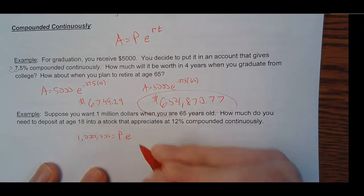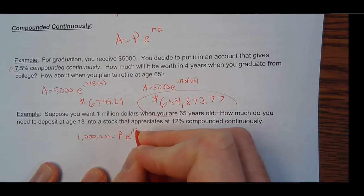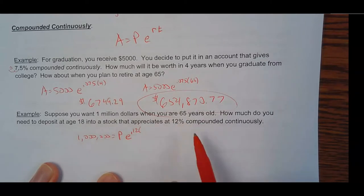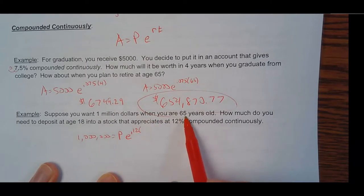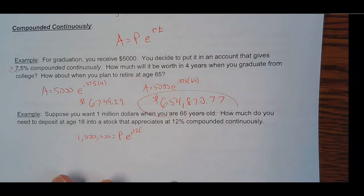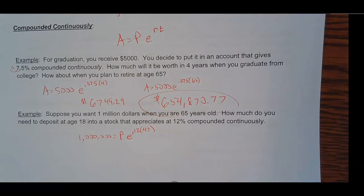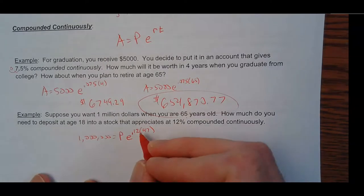I'm just going to say P, E to the, and then 0.12. And then we'll say when you're 65, let's say that you're 18 right now. So let's take 65 minus 18. So we'll say 47 years later. So what amount would you need to put in right now to be a millionaire if it made 12% compounded continuously?